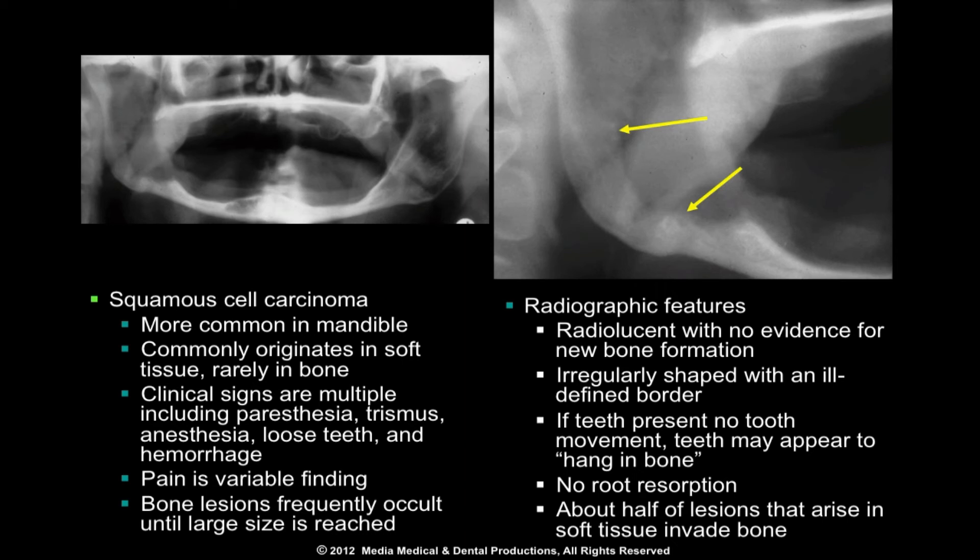Clinical features may also include grossly loosened teeth, hemorrhage, and later airway obstruction. Pain is a variable finding, and those that arise in bone are frequently silent until they have reached a fairly large size.